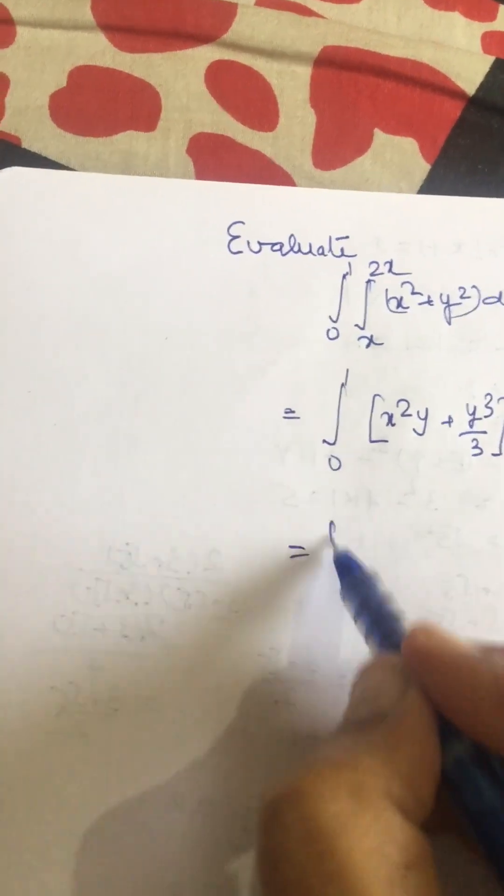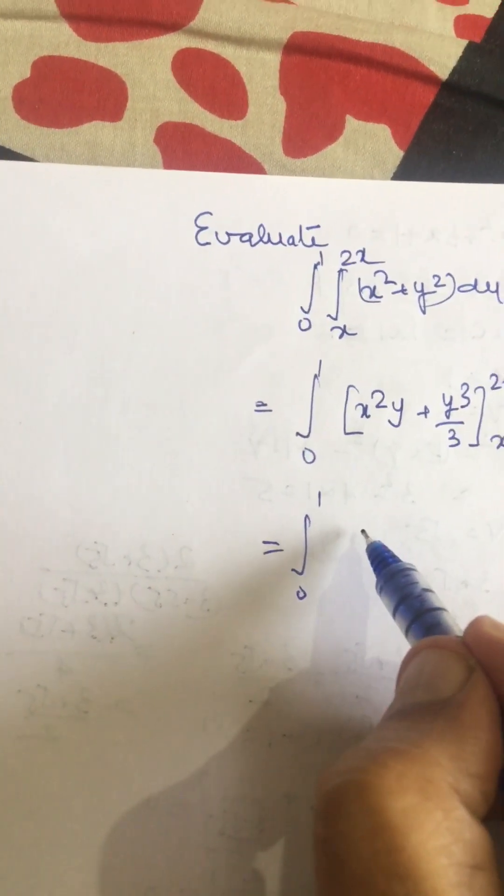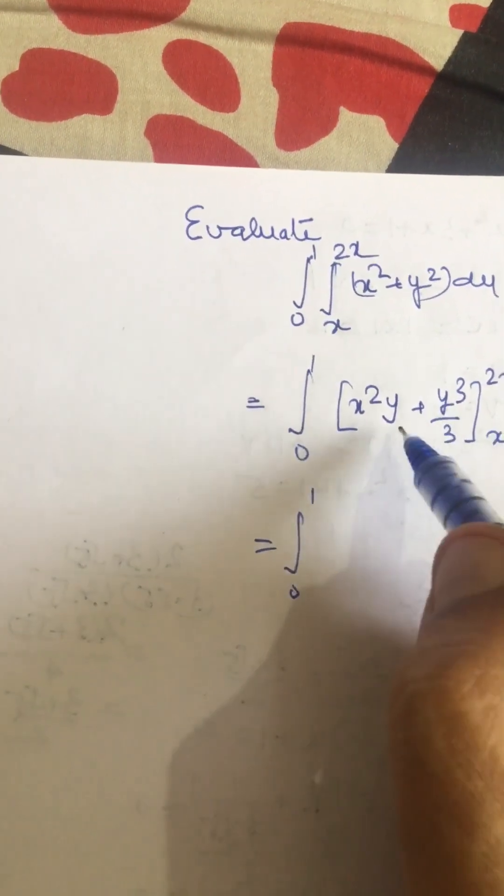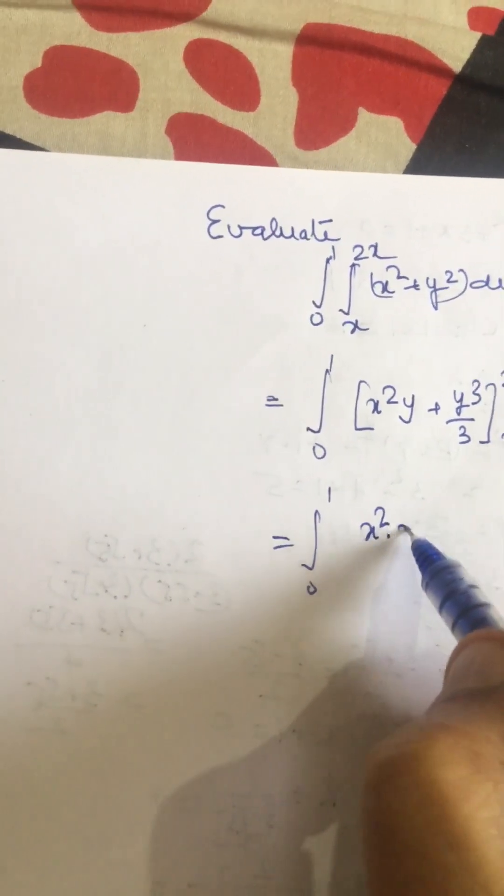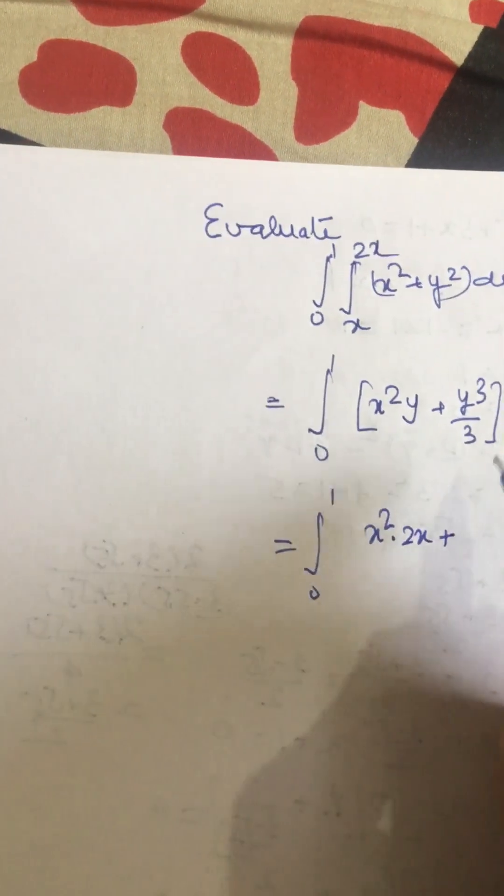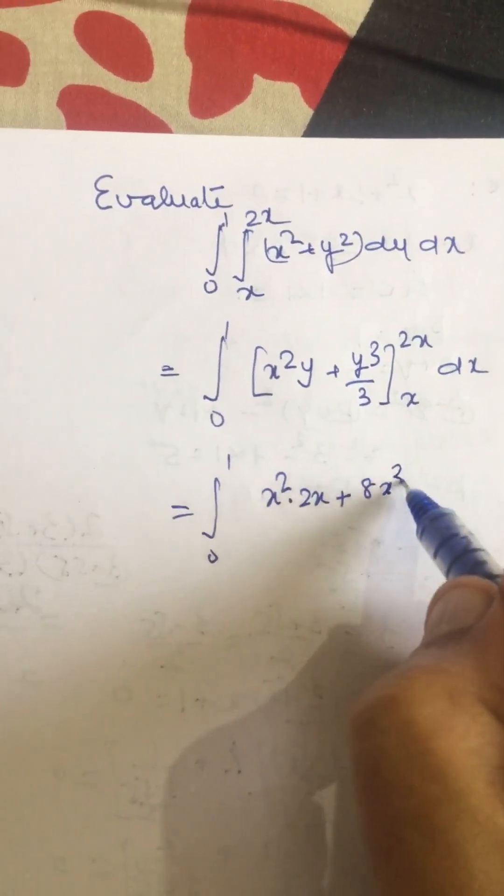This we can write, this becomes 2x here, plus 2x cube that is 8x cube by 3.